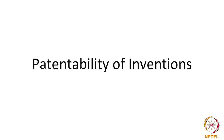Patentability of Inventions. In this lecture, we will look at what can be patented. The act tells us that for anything to be patented, it has to qualify under the definition of an invention under the act — that is section 2.1(j). We will also see what inventions are not patentable, or the excluded subject matter that has been excluded from patentability.